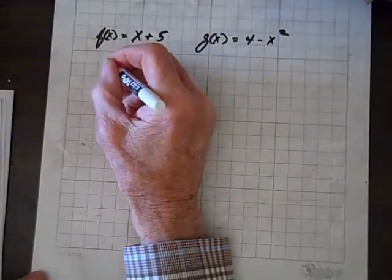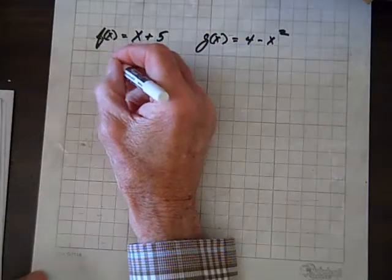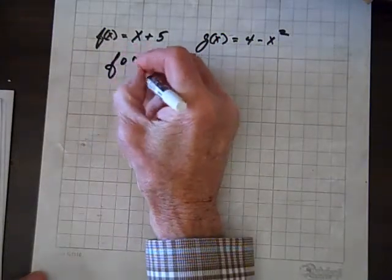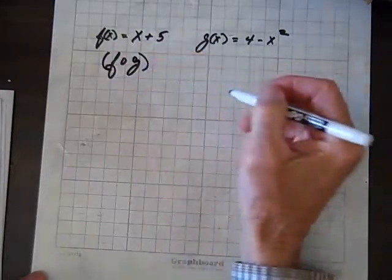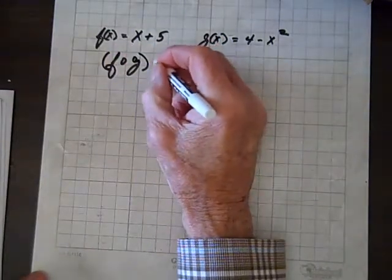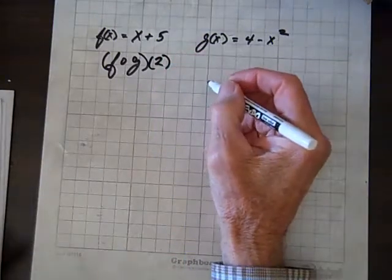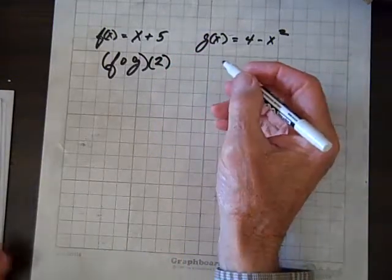So, what if we evaluate f of g of, say, 2? And then, the question is, what do you mean by that?